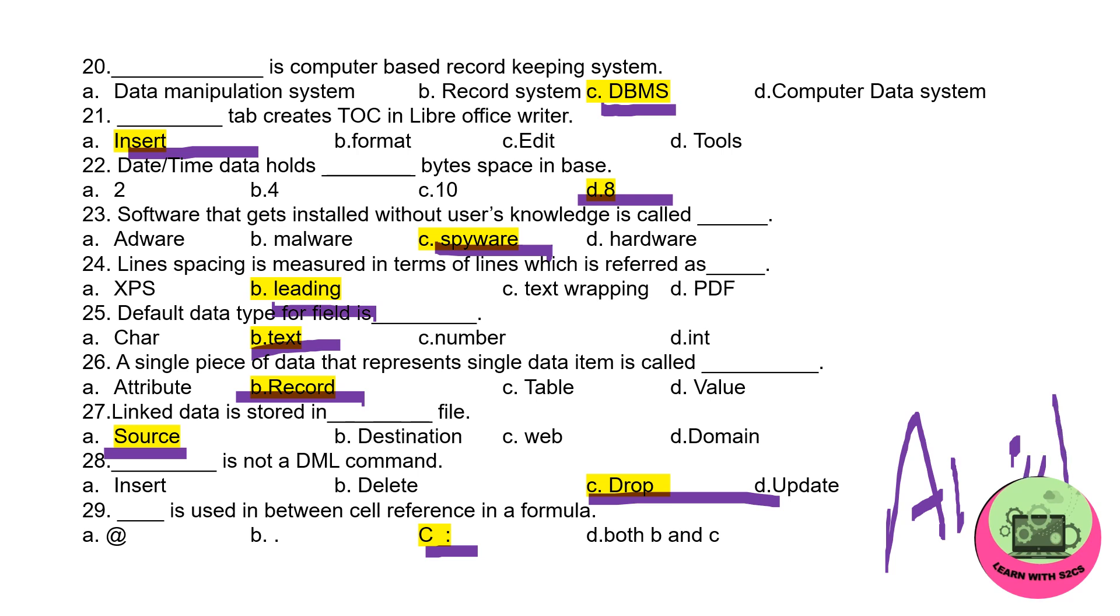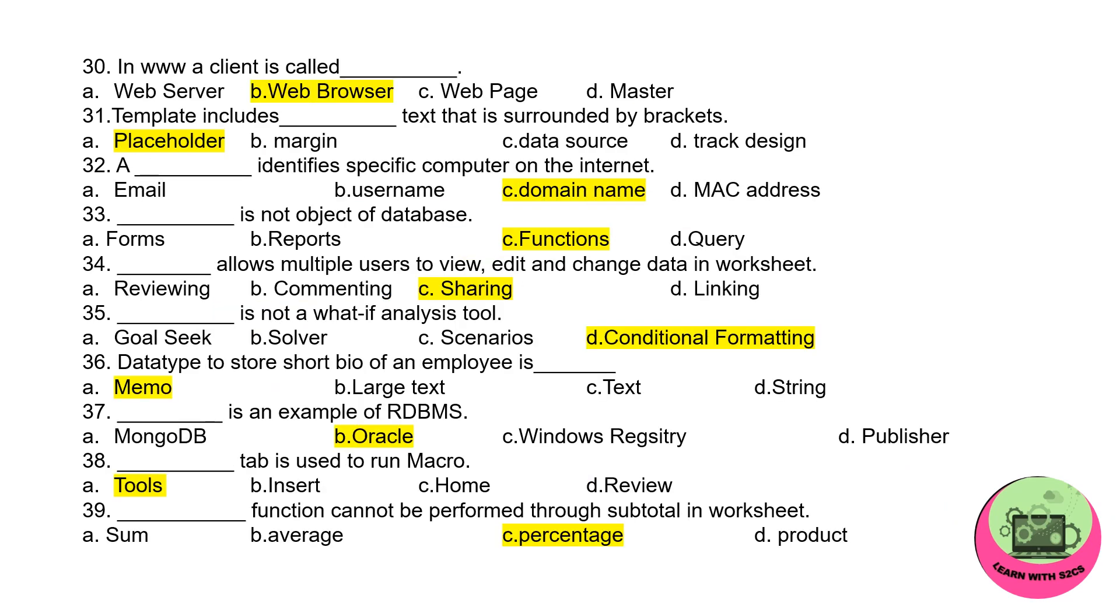Moving to next set. In WWW, a client is called web browser. So your web browsers may be Google, Safari, and all. Templates include placeholders - you can see like this, curly braces that are surrounded by the brackets. Dash identifies specific computer on the Internet - that is domain name. Dash is not an object of database: functions, because others you can find by using the database - forms, reports, queries and all. Dash allows multiple users to view, edit and change data in worksheet: sharing.